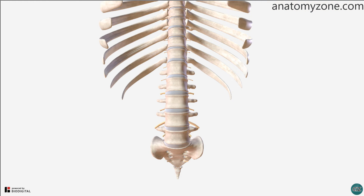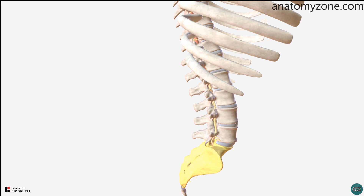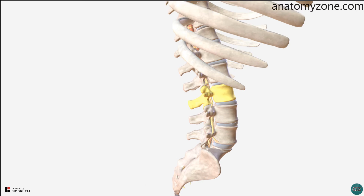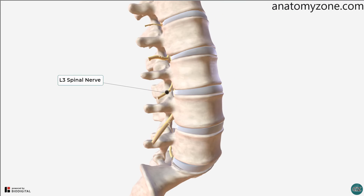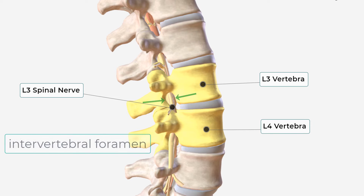As another example, if we look at this vertebra in the lumbar region, we can see where the lowest rib articulates. So this must be the 12th rib, and therefore articulates with the 12th thoracic vertebra. We can count down L1, L2, and see that this is the L3 vertebra. We can alternatively count back from the 5th lumbar vertebra, starting from above the sacrum: L5, L4, and then L3. Here you can see the L3 spinal nerve exiting from between the L3 and L4 vertebra through the intervertebral foramen.